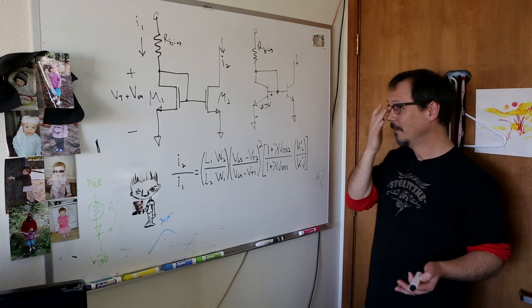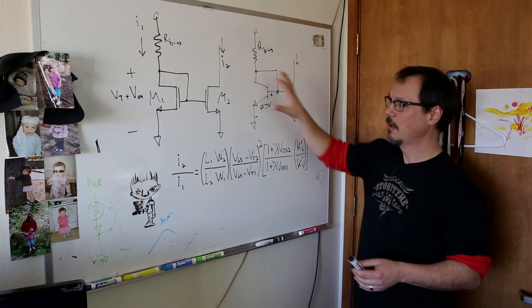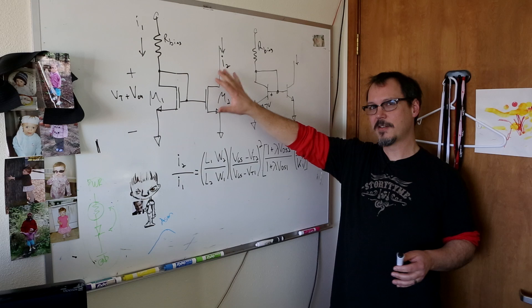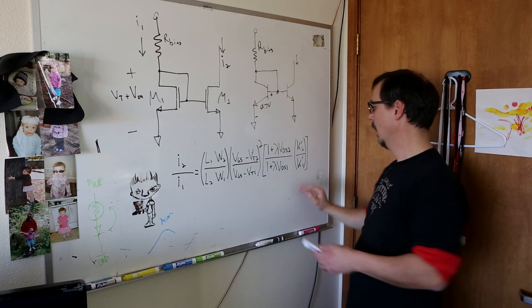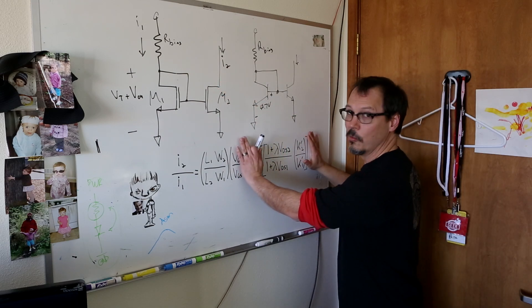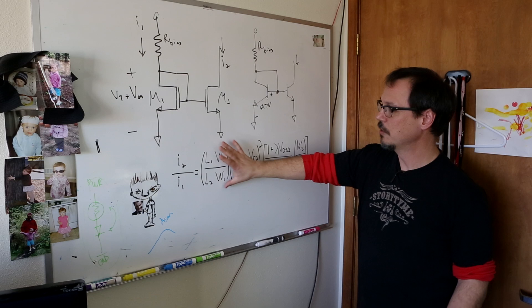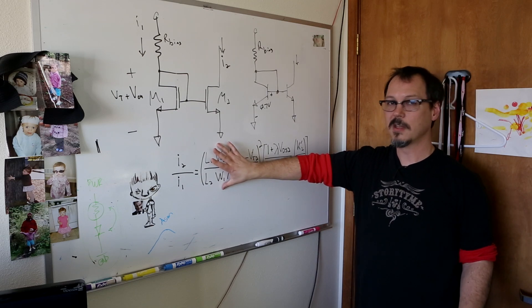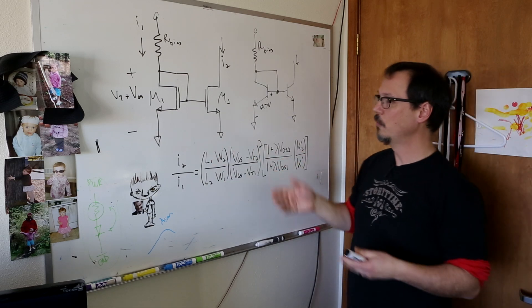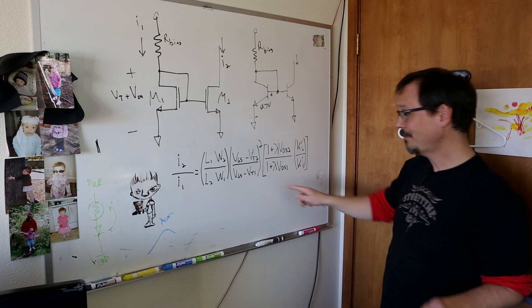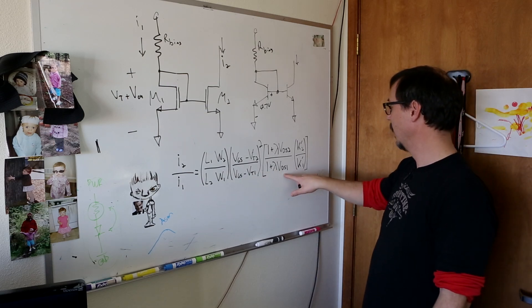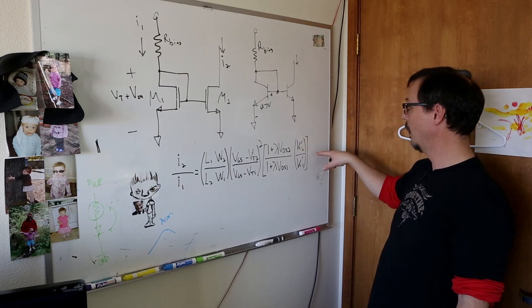Assuming that your current mirror exists on a single IC die, this all goes away. And you're left with just the dimensions of this thing. Now, as soon as you start working with discrete components, you got to worry about this one, you got to worry about this one, you got to worry about K prime.